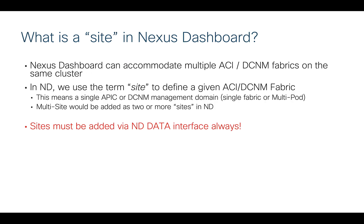The next concept is the term 'site' in Nexus Dashboard. Nexus Dashboard can accommodate and work with, receive information and telemetry from, multiple sites at the same time — and it can be a mix of ACI sites, DCNM sites, Cloud ACI sites. A single Nexus Dashboard can accommodate multiple different fabrics. We use the term 'site' to define a given ACI or DCNM fabric.